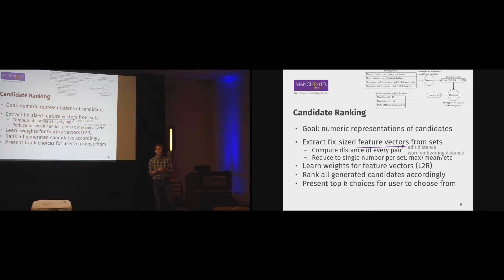Based on these features, we learn a ranker using a simple classifier - in this case we use SVM based on the learn-to-rank approach at an offline phase. In an online phase, we rank all the generated candidates accordingly and present the top K choices to the user for him to finally disambiguate.